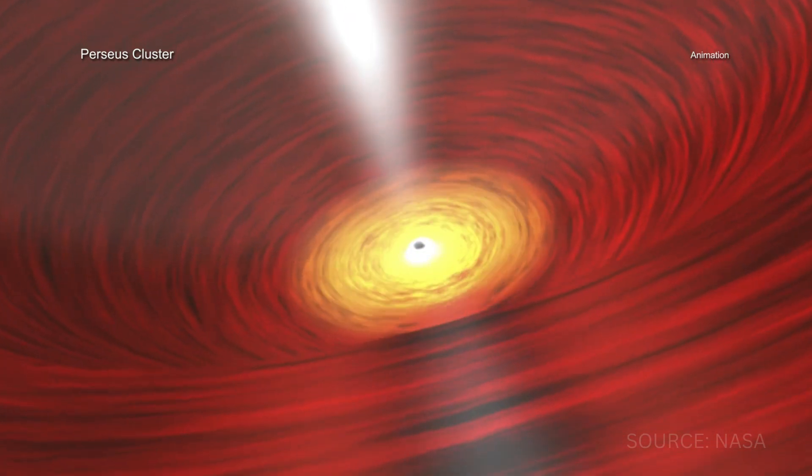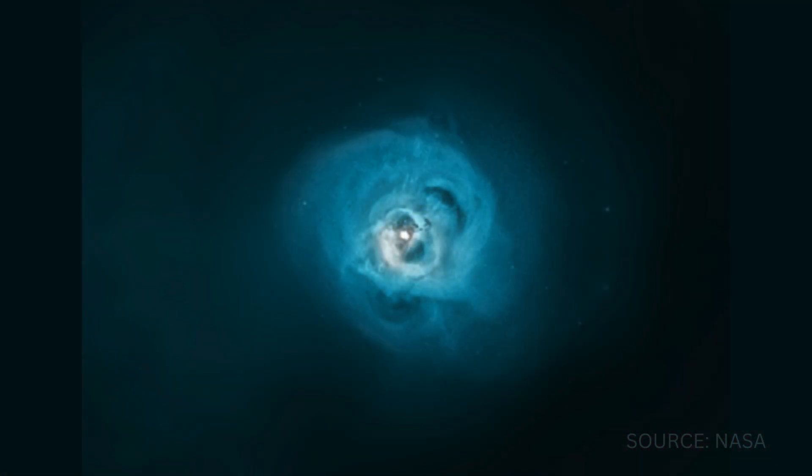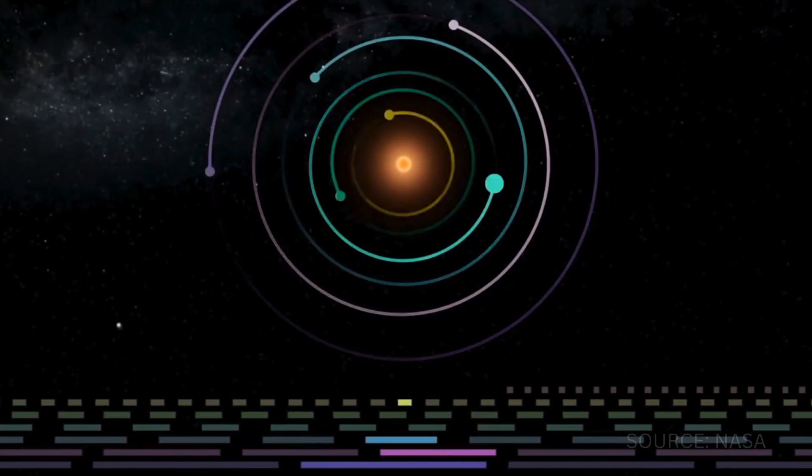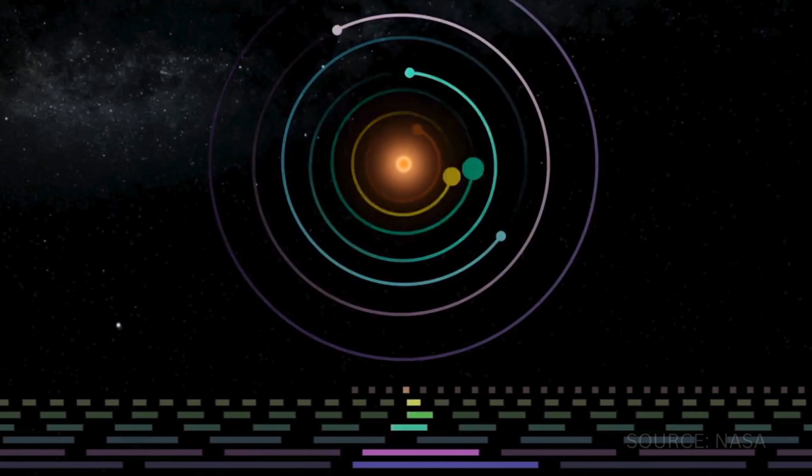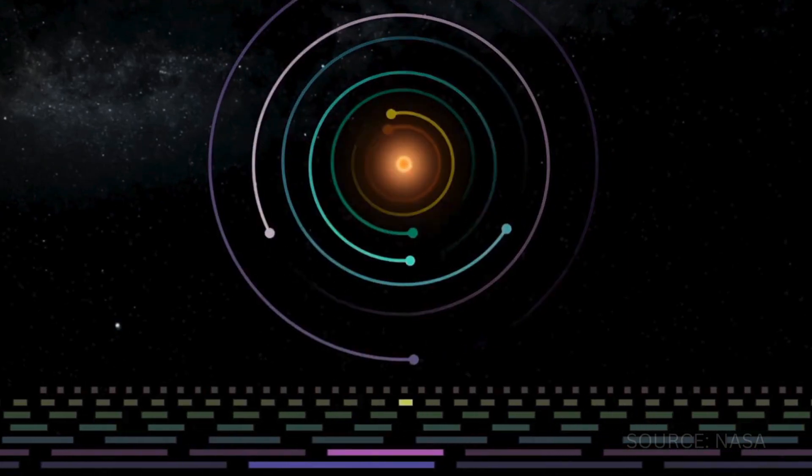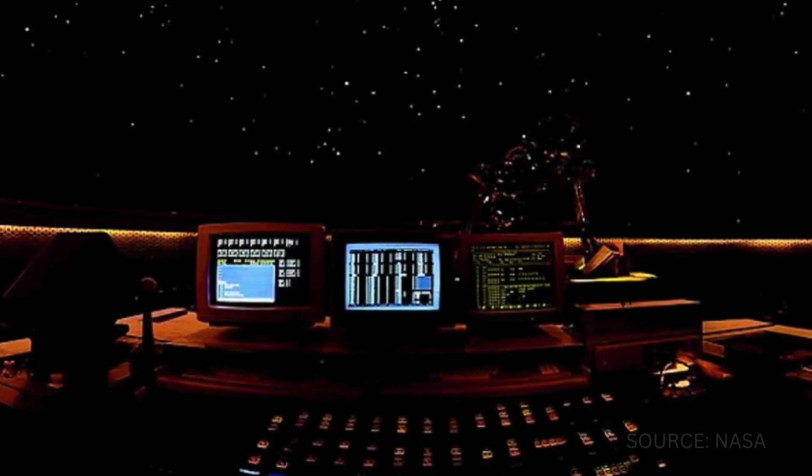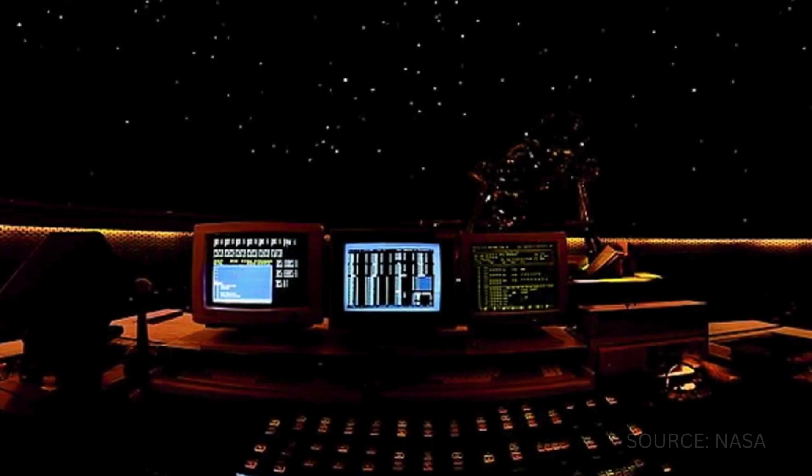Here's where it gets cool. NASA's team took those pressure waves, detected as X-ray data, and turned them into sound through a process called sonification. They extracted the waves moving outward from the black hole, then scaled them up by 57 to 58 octaves. That's a pitch shift of 144 to 288 quadrillion times higher than the original. Yes, quadrillion, with 15 zeros. The result? An eerie deep hum that sounds like something out of a sci-fi movie.